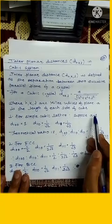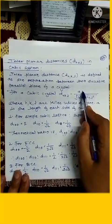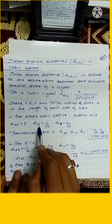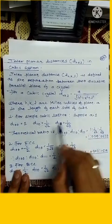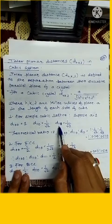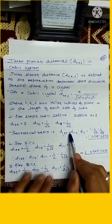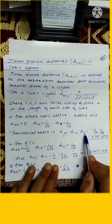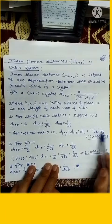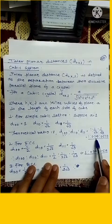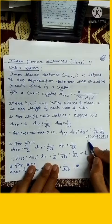Now for a simple cubic lattice, suppose value of a is 1. So d₁₀₀, this value is 1. For d₁₁₀, just put the value h is 1, k is 1, this is 1 by root 2. For plane d₁₁₁, the interplanar distance is 1 by root 3. So theoretical ratio of d₁₀₀ to d₁₁₀ to d₁₁₁ is 1 : 1/√2 : 1/√3. If we solve this, it is 1 : 0.707 : 0.577. This is an important parameter.